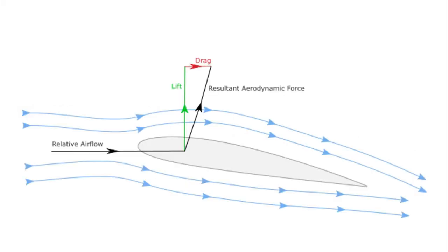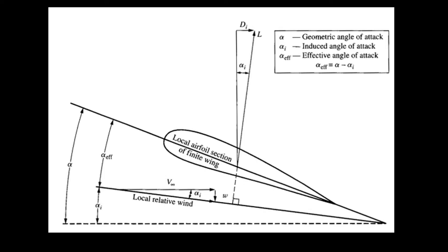This downwash provides a downward component to the free stream velocity. As a result, the effective velocity on the wing is tilted downward in the vicinity of each airfoil section. On an infinite wing, the lift vector L would be perpendicular to the relative airflow. But on a finite wing, because of downwash the effective angle of attack is reduced — it is no longer alpha, but alpha minus alpha_i. Since the lift vector is now tilted by alpha_i, it has both a horizontal and a vertical component. This horizontal component is the induced drag.